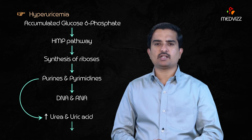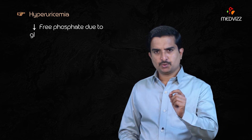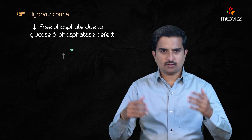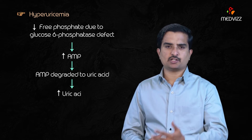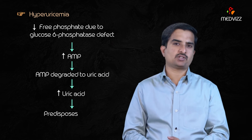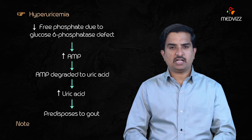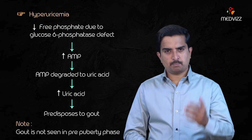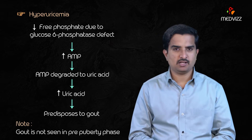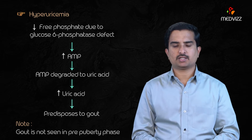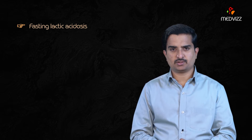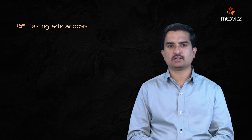Uric acid excreted in the urine causes hyperuricemia. There is decreased free phosphate due to the glucose-6-phosphatase defect, and increased AMP is degraded to uric acid, predisposing to gout. However, gout is not seen in the prepuberty phase — children with Von Gierke's disease may not present with gouty arthritis.